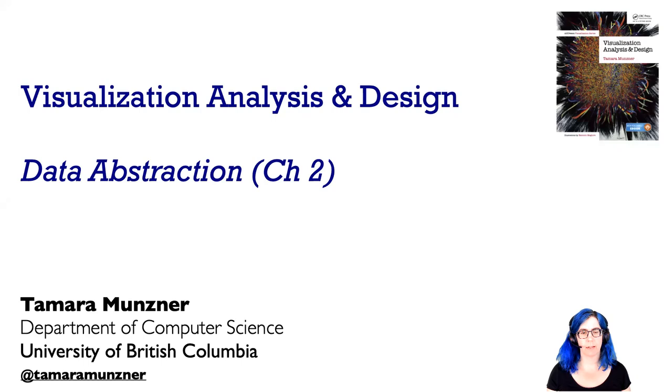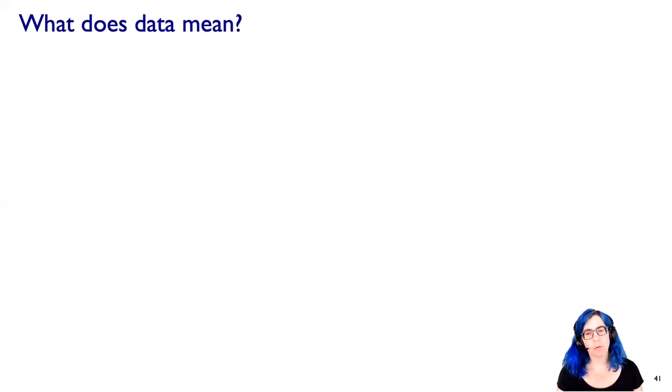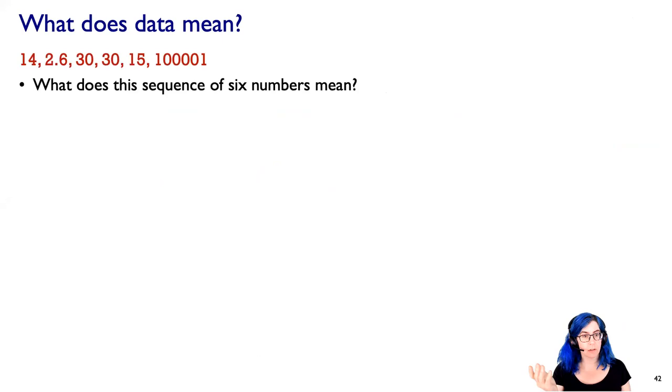All right, now let's continue with visualization analysis and design by talking about data abstractions. So what does data mean? Well, it depends. For example, here's a sequence of six numbers: 14, 2.6, 30, 30, 15, 100,001.